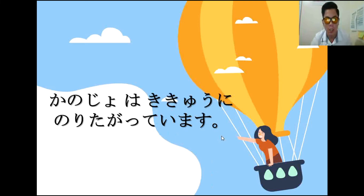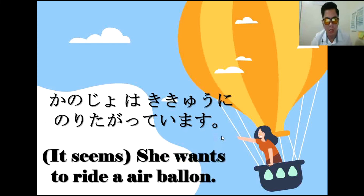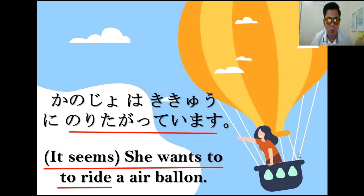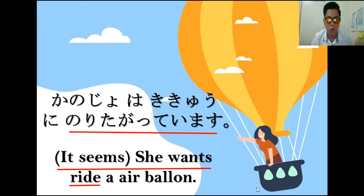Another sample: kanojo wa kyuukyuu ni noritagatteimasu. Means it seems she wants to ride a hot air balloon. Noritagatteimasu means it seems she wants to ride. Yung babae is nagpapakita na parang gusto niyang sumakay sa air balloon. Ito po yung gamit ng gatteimasu.